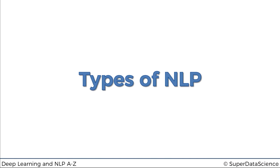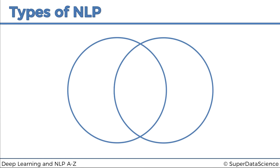Hello and welcome back to the course on deep natural language processing. Today we're going to talk about the types of natural language processing. We've got a Venn diagram with two circles in it,